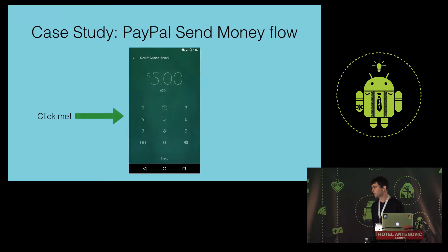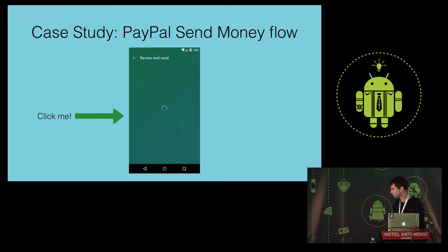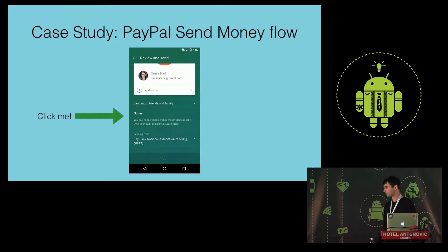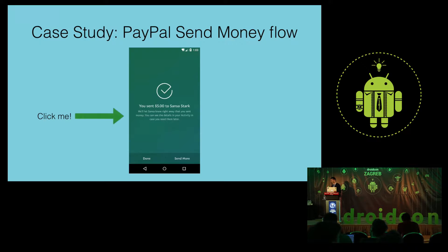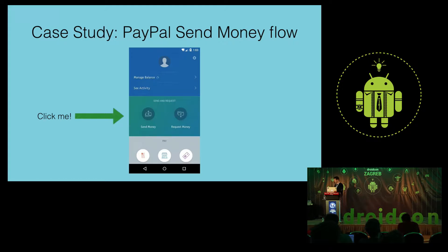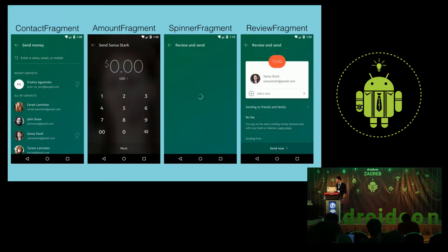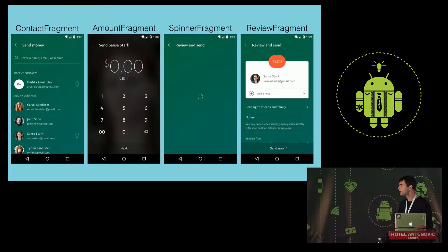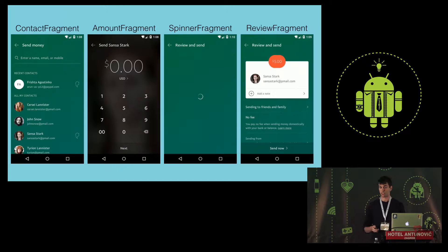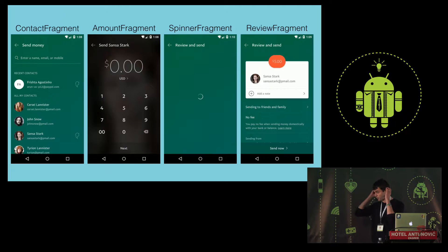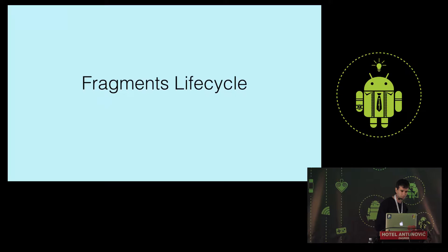Sending money has a few steps: selecting the recipient, inputting the amount and currency, some server-side validations and calculations, reviewing the transaction details and confirming it — and bam, your money is gone. Hopefully it also reached the other side. So we have a few fragments: the contact fragment for selecting the person, the amount fragment for inputting the amount, a spinner fragment which is an intermediate page shown while the app waits for the server to respond, and the review fragment for showing all transaction details.